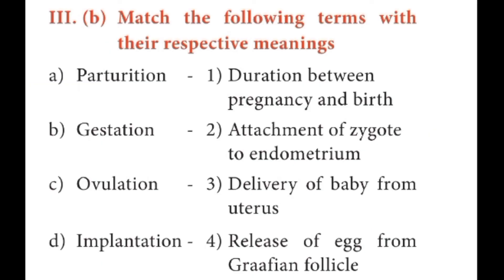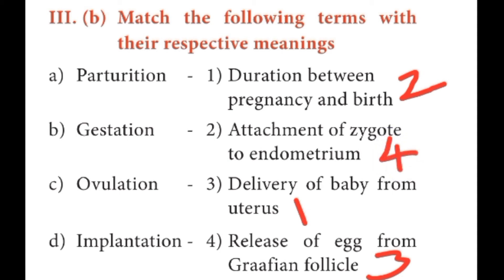Section B: match the following terms with their respective meanings. First: parturition — answer is delivery of baby from uterus. Second: gestation — answer is duration between pregnancy and birth. Third: ovulation — answer is release of egg from Graafian follicle. Fourth: implantation — answer is attachment of zygote to endometrium.